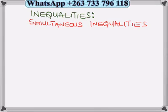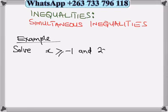Inequalities. We want to do simultaneous inequalities. Let's quickly look at this example. We want to solve x is greater than or equal to minus 1 and 2x plus 4 is less than 12.